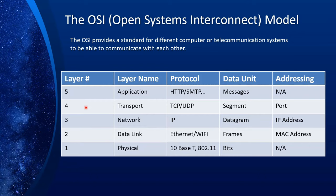Layer four is the transport layer. The protocol is TCP or UDP — there are other protocols, but these are the most important ones. The data unit is segment, and the addressing scheme is port. If you create a service, it has to have a port number in order to be reachable.